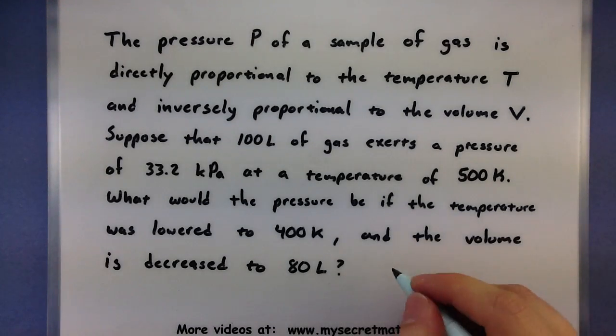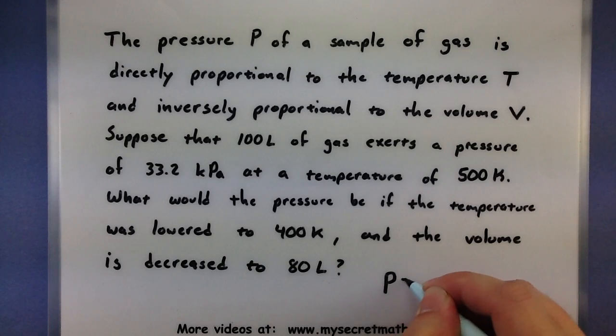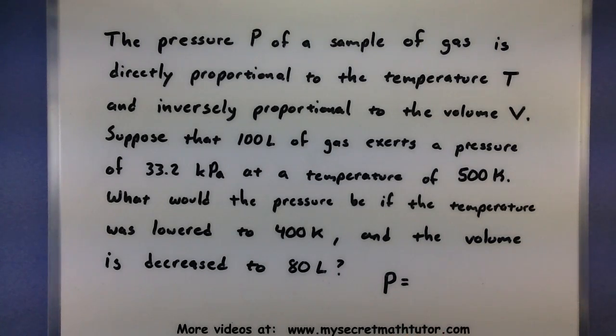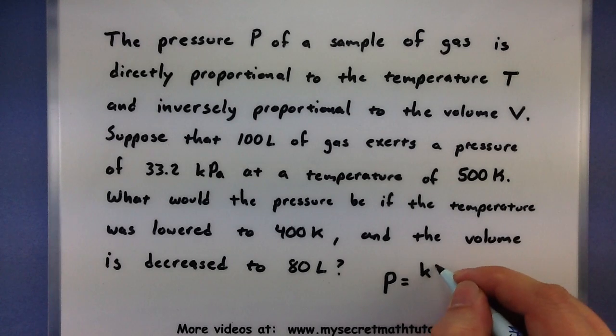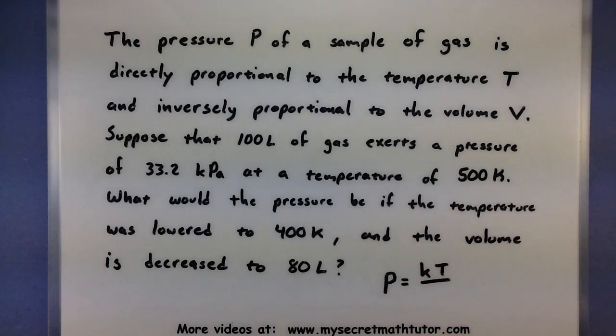So let's see, our pressure p for a sample of gas is directly proportional to the temperature. So kt, but it's inversely proportional to the volume. So we'll put the volume on the bottom. So we'll need to use this formula to go ahead and solve for the k.